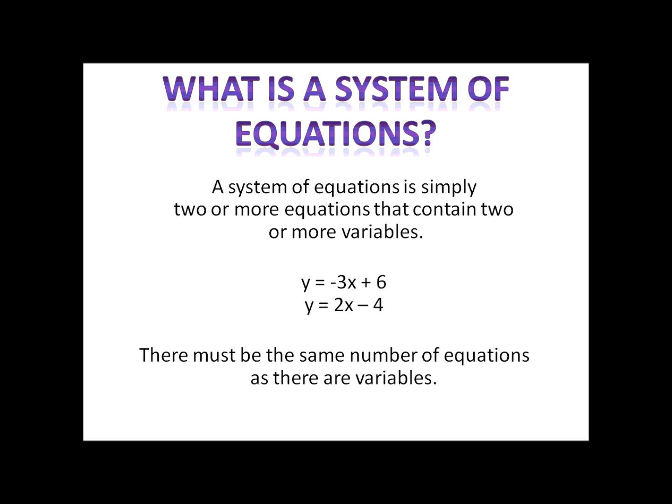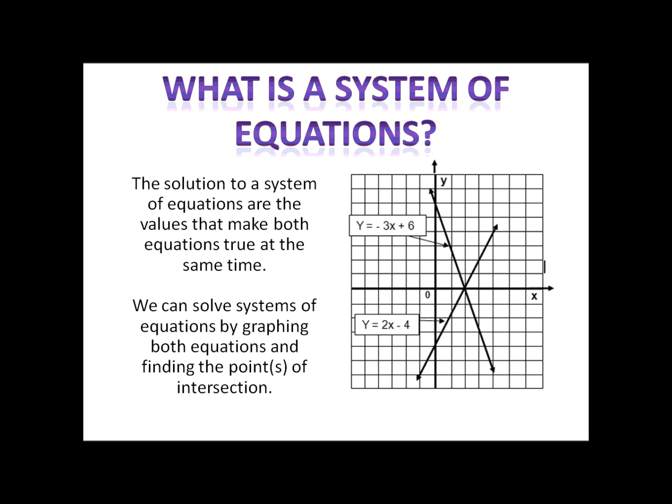Here we have two variables, x and y, and so we must have two equations. The solution to a system of equations is the value for x and y that make both equations true at the same time. I'm trying to find the numbers that I could plug into each of those equations that would make both of them work. We solve a system of equations by graphing both of the lines and then finding the point of intersection — that point of intersection is the x and y value that we're looking for.